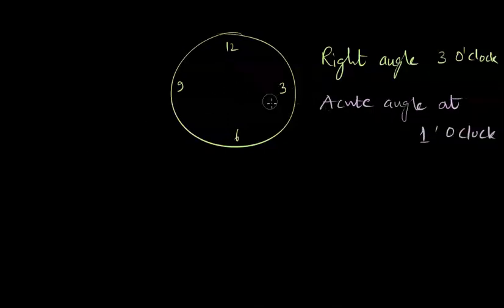What about an obtuse angle? Let's draw an obtuse angle which has to be less than straight angle but greater than 90 degrees. Let's keep a minute hand here and hour hand somewhere here, probably at 7. So this is an obtuse angle at 7 o'clock.